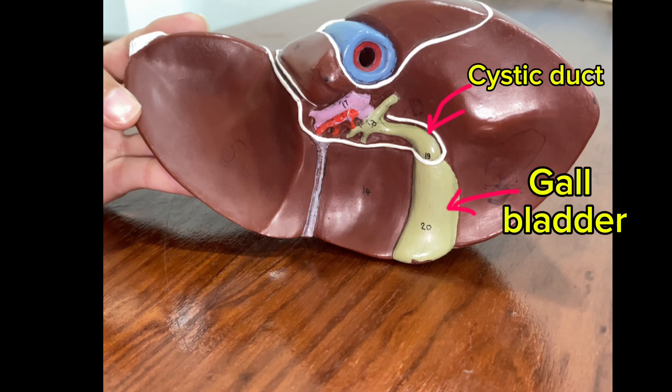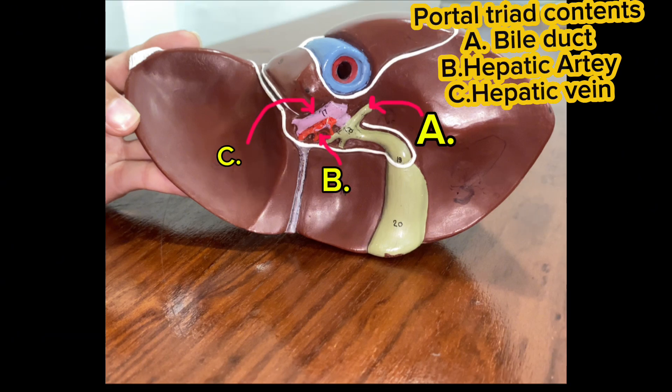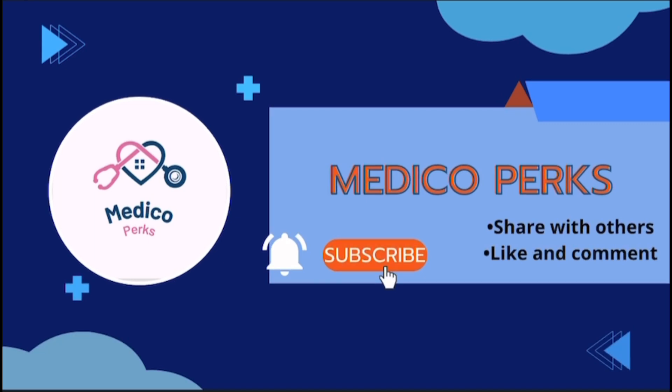You can see the cystic duct and gallbladder indicated by the pink arrows. Here I have shown the contents of the portal triad, marked by the alphabets A, B, and C. The structure labeled A is the bile duct, the structure labeled B is the hepatic artery, and the structure labeled C is the hepatic vein.